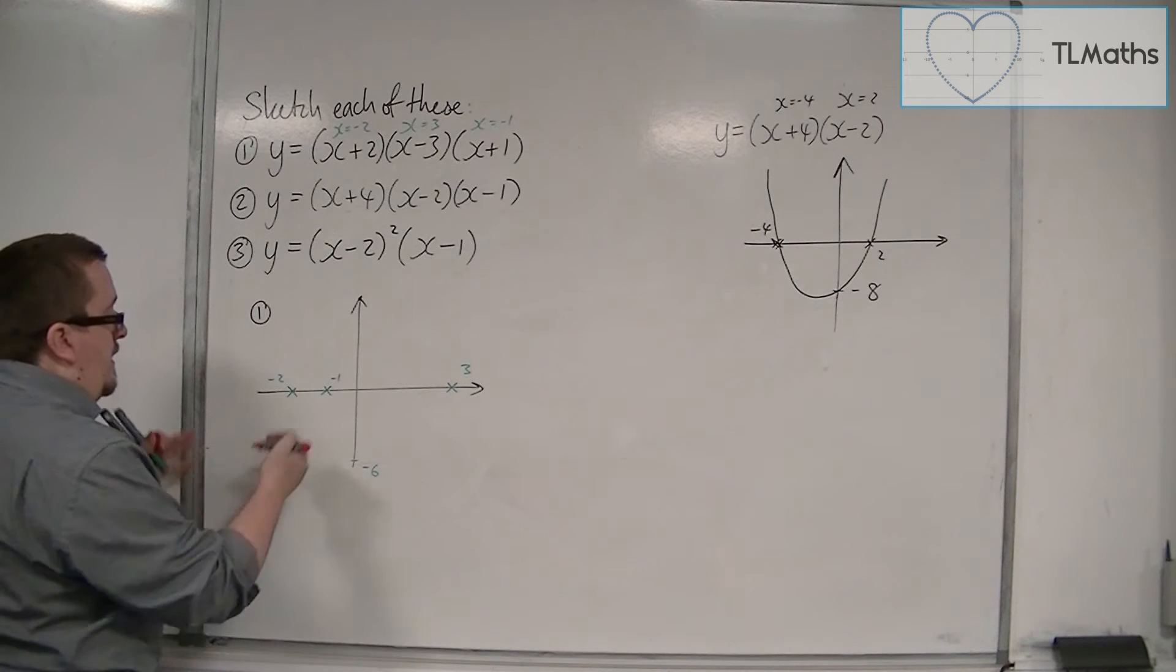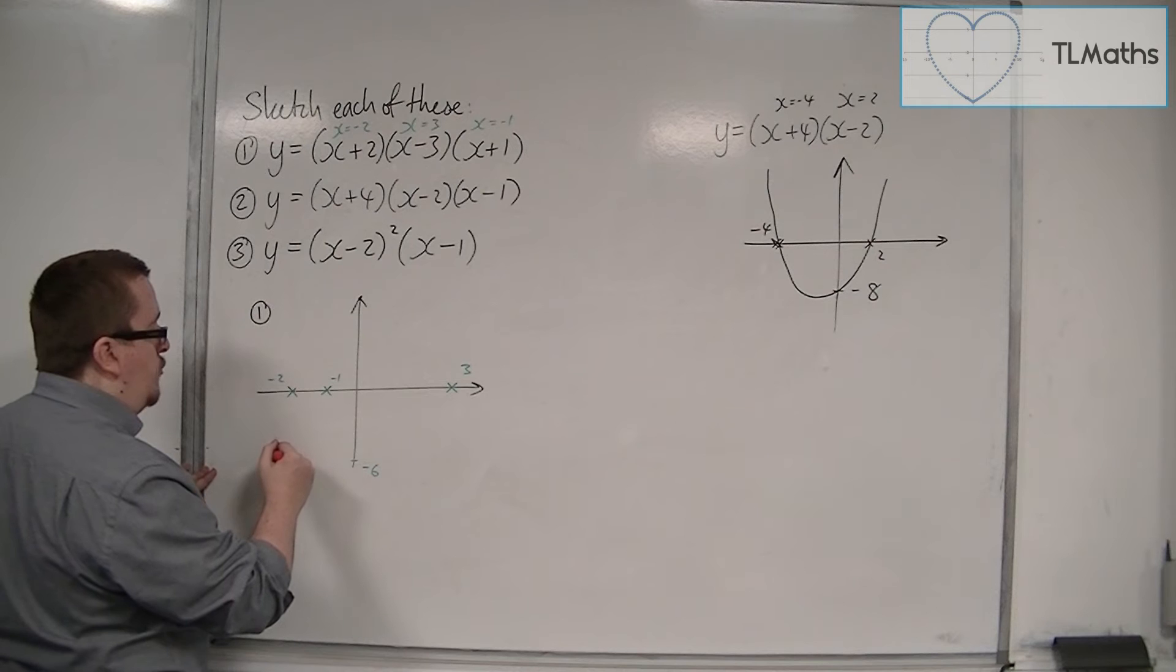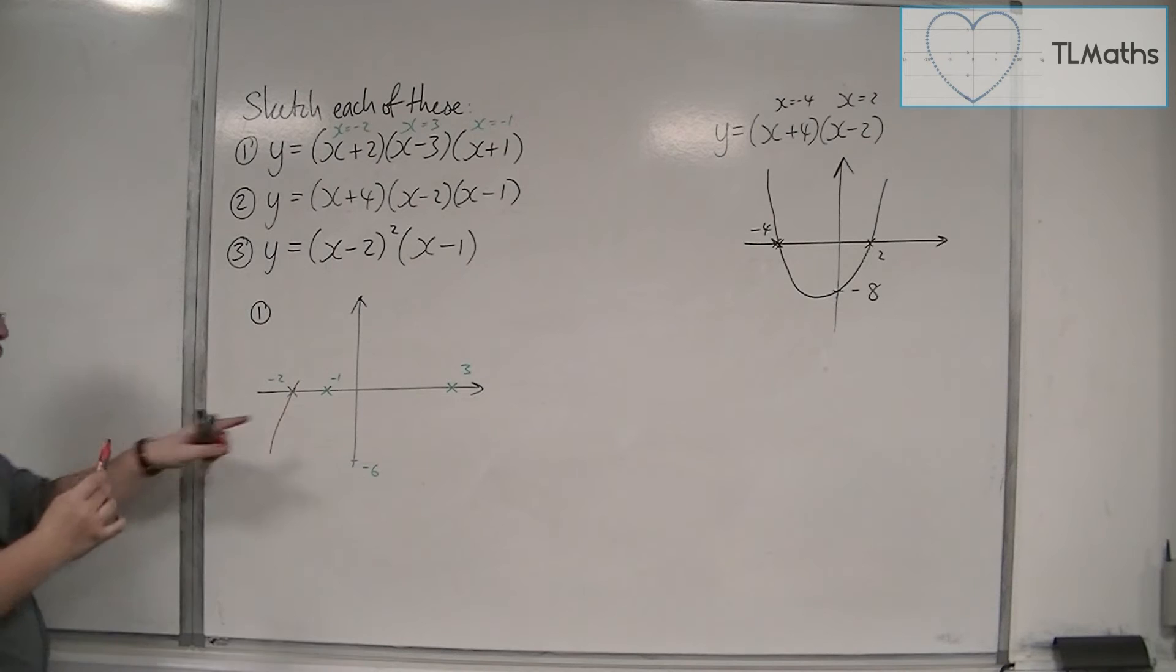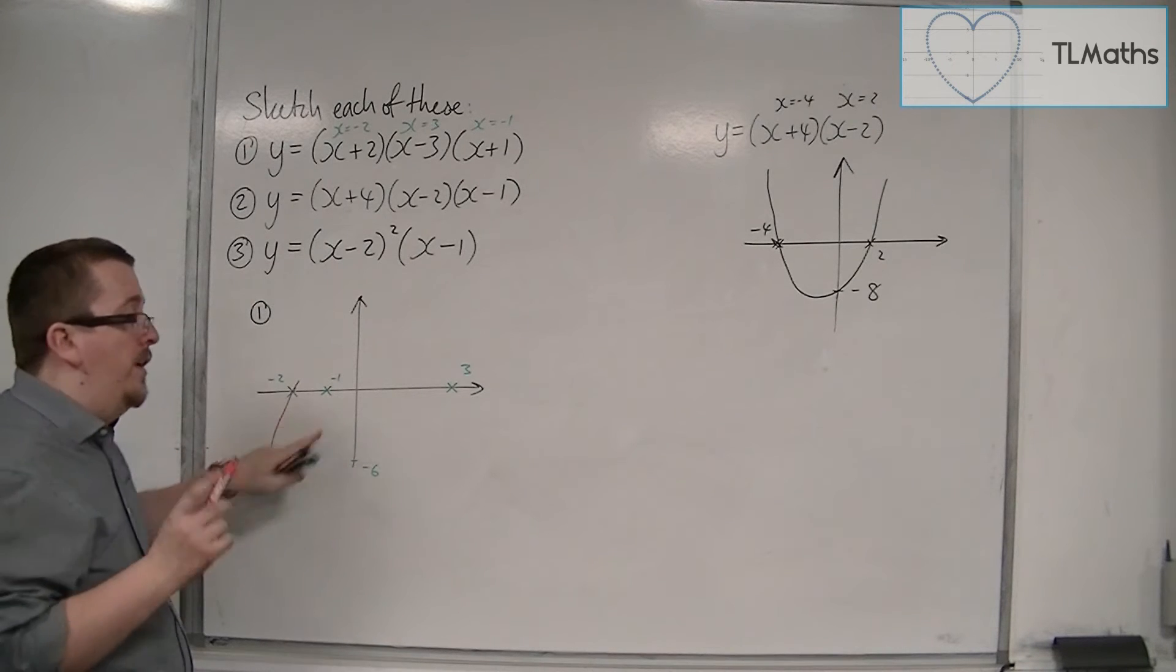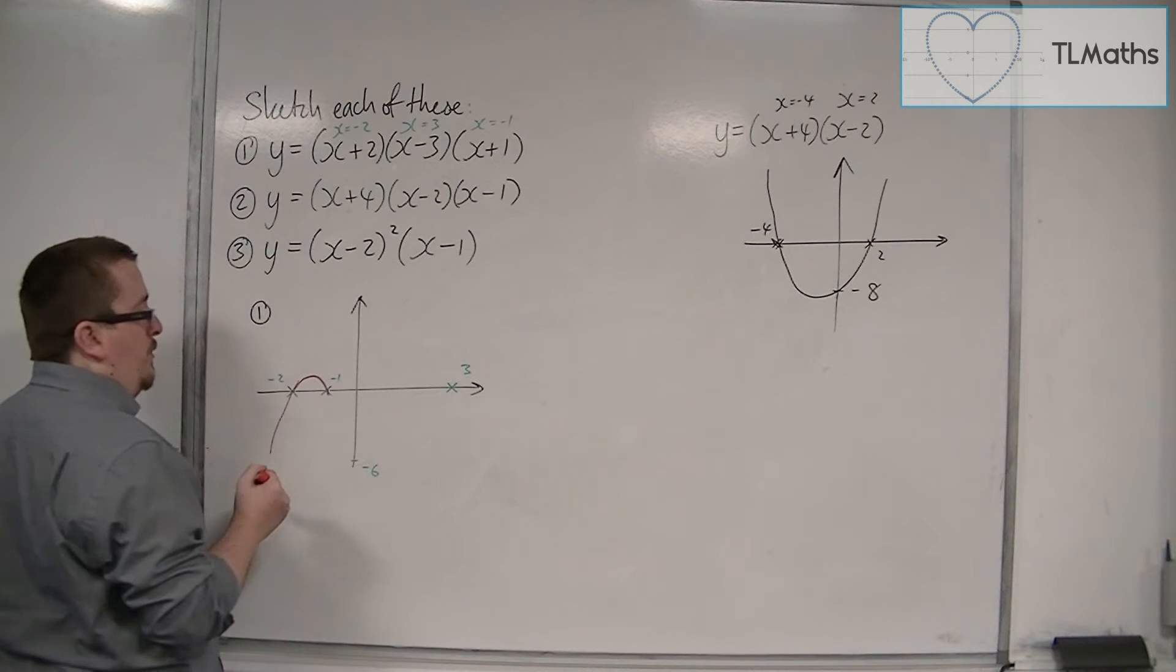So it's starting down here. If it's starting down here, the first thing it must do is cross through at minus 2. Now, because it must cross through the x-axis at minus 1, it will have to reverse itself to go through minus 1.